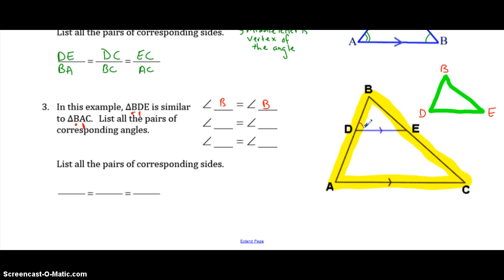You can't just say angle D because we don't know if you're talking about one angle or the other, so you have to use three letters. Angle BDE — which is this angle here — equals angle BAC because of the F-pattern. And angle BED equals angle BCA because of the F-pattern.